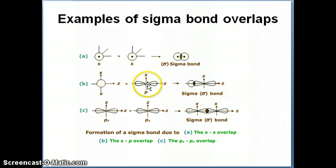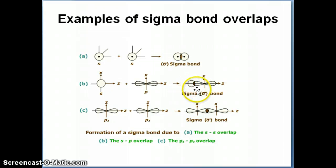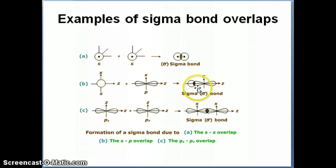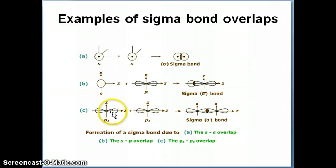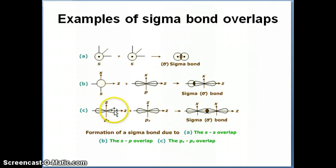An s–p overlap also forms a sigma bond, because that area of overlap is again going to be symmetric around the bond axis — the top and the bottom part will exactly match if you rotate the electron density. A pz–pz overlap, where one part of the p orbital overlaps end-to-end with the other part of the p orbital, will also give us a sigma bond.